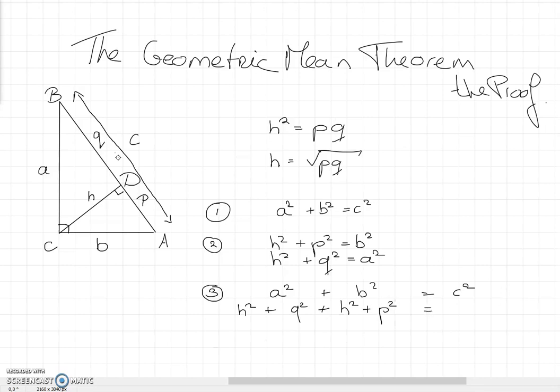And c, this length, is equal to p plus q, so c squared is (p plus q) squared. Now, simplifying this expression gives 2h squared plus p squared plus q squared. And simplifying this expression using remarkable products is p squared plus 2pq plus q squared.